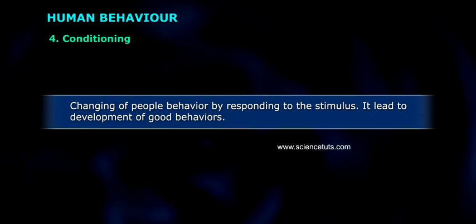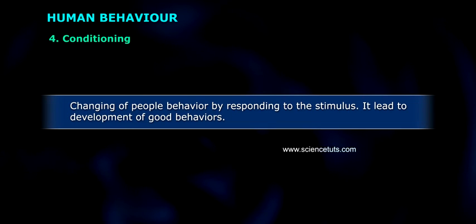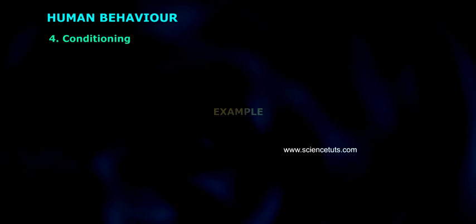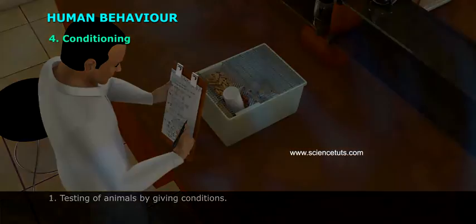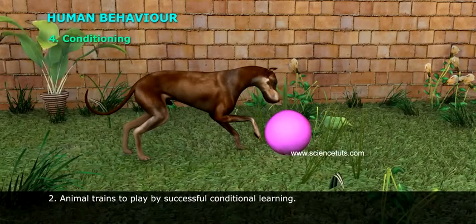Conditioning: changing of people's behavior by responding to a stimulus, leading to the development of good behaviors. Example one — testing of animals by giving conditions. Example two — an animal trained to play by successful conditional learning.